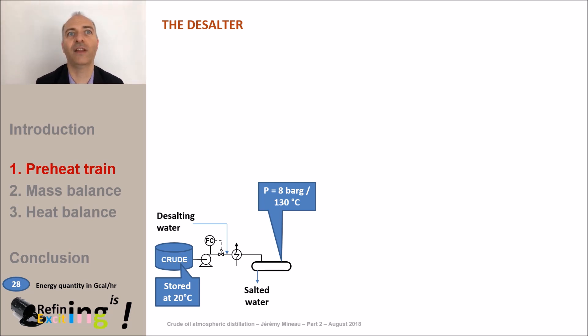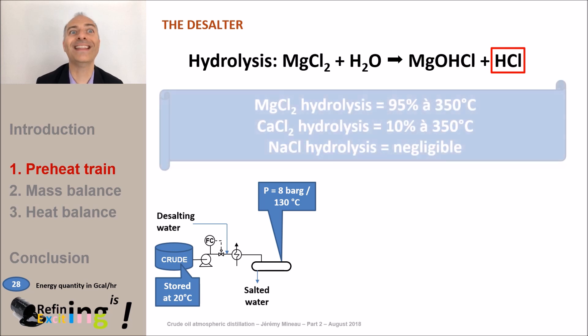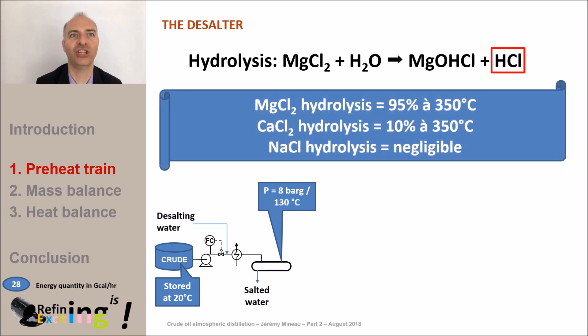The amount of HCl that will be formed at the top of the distillation depends on the residual MgCl2 content. Indeed the hydrolysis temperatures of the salts are given just here. We can see that 95 percent of the MgCl2 is hydrolyzed at 350 degrees C when only 10 percent of the CaCl2 is hydrolyzed at the same temperature.